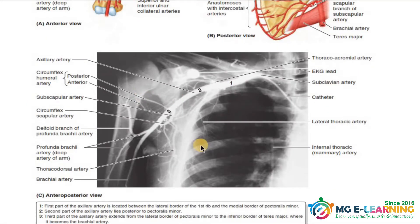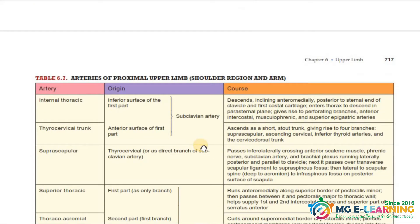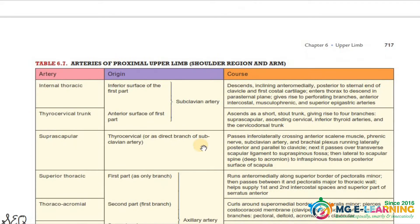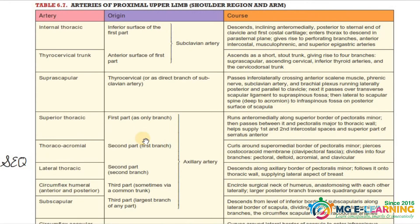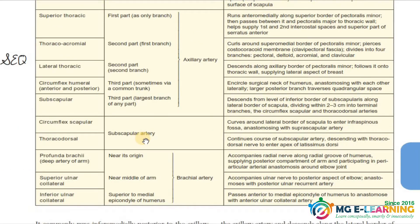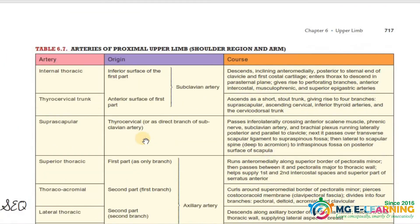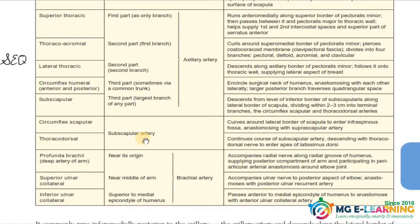Next, we would like to discuss table 6.7, which covers arteries and proximal content. This is referred to as SQB. You need to understand the entire table and memorize all the tables — yaad karna hai.